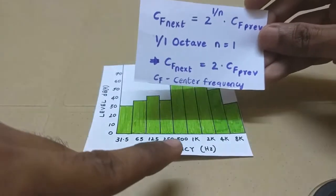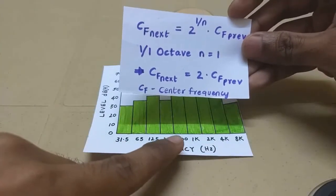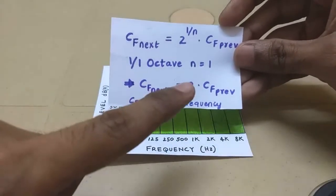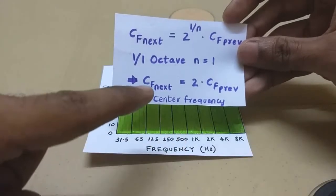Isn't it true? So you can check it here: center frequency previous is 250, consider this band. 250 times 2 is 500. That is the center frequency next.